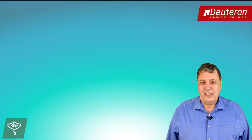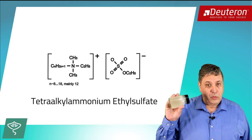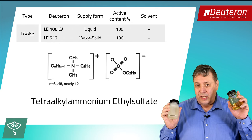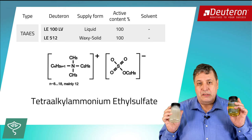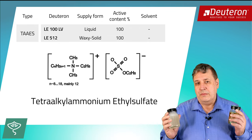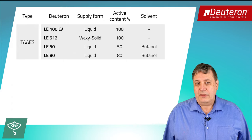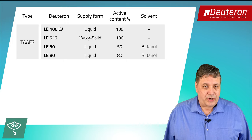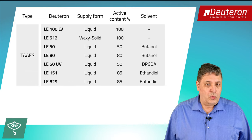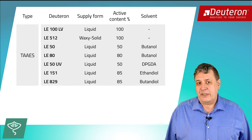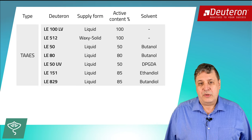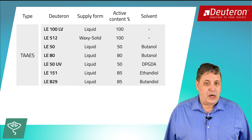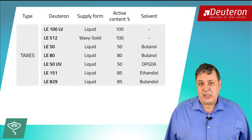Our classic product group since decades is based on TAEAS, as mentioned before. Deuteron LE512 is a wax-like solid with a melting point of approximately 90 degrees Celsius, while Deuteron LE100 is a liquid, although it has 100% active content. They are especially suited for 100% systems. These both types are variants of Deuteron LE512, diluted in butanol for adjusting antistatic properties in liquids — for example, electrostatic spraying. The next three types are diluted in reactive thinners. Deuteron LE50UV with DPGDA is for radically curing UV systems. Deuteron LE151 and LE829 are diluted in diols for the reaction with polyurethane systems. The diols are reactive thinners, which are also cross-linked with the NCO hardener. This must be considered in the stoichiometry.